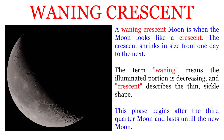A waning crescent Moon is when the Moon looks like a crescent and the crescent shrinks in size from one day to the next. The term waning means the illuminated portion is decreasing and crescent describes the thin sickle shape. This phase begins after the third quarter Moon and lasts until the new Moon.